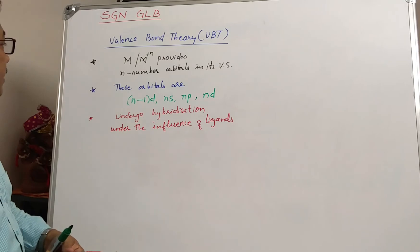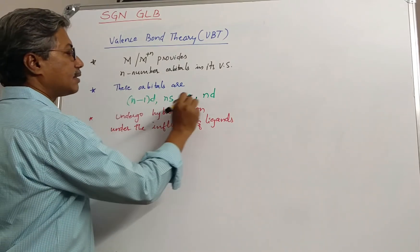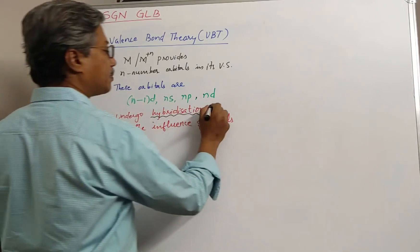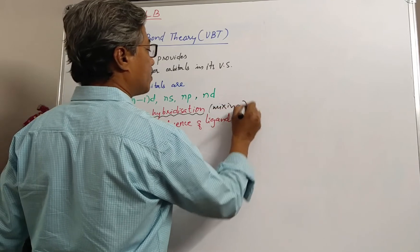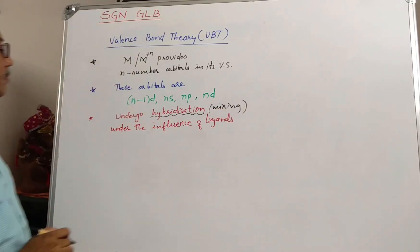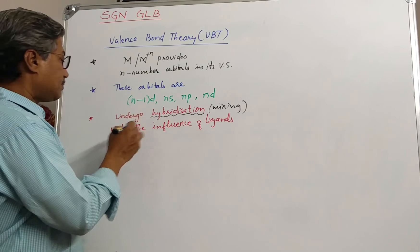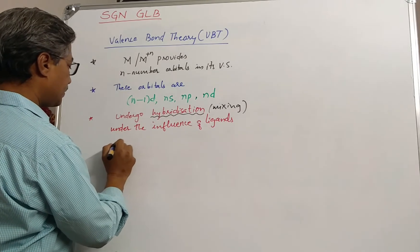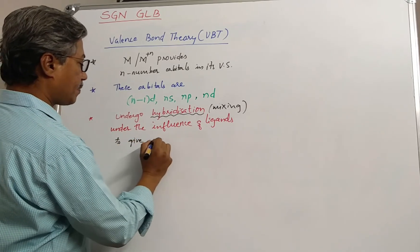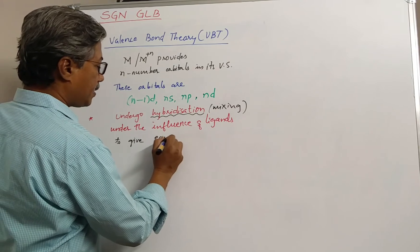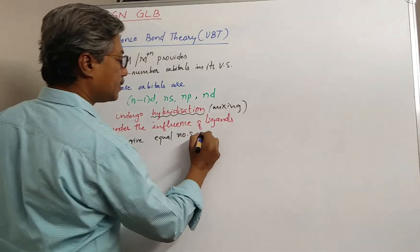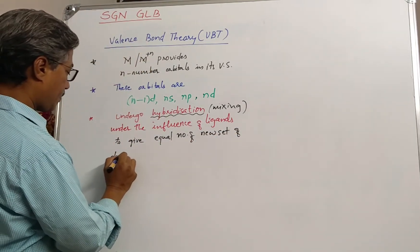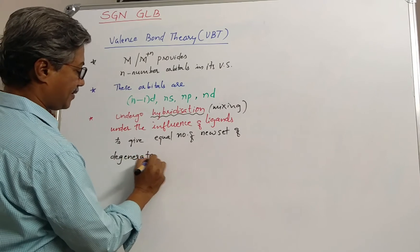Here the important point is that these orbitals undergo hybridization. Hybridization means mixing of atomic orbitals — it is an imaginary process. These orbitals undergo hybridization to give an equal number of a new set of degenerate orbitals.